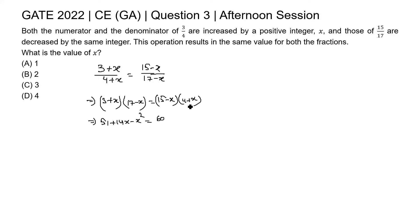This is 15x minus 4x, so 11x, this is minus x square. x square x square be cancelled out. 14x minus 11x is 3x and 60 minus 51 is 9.